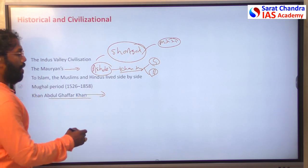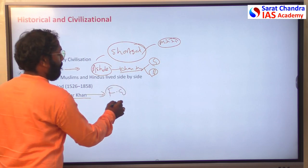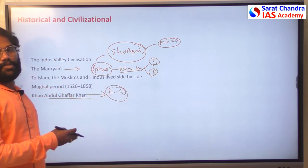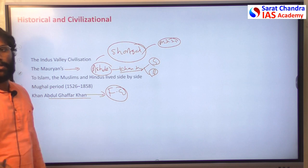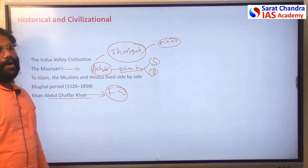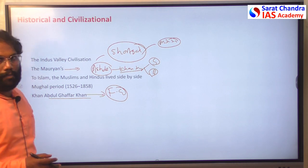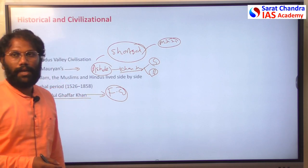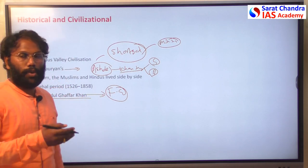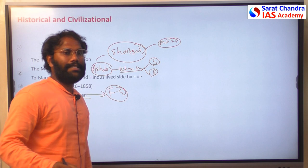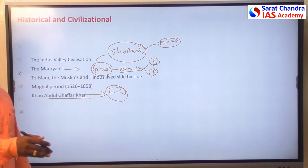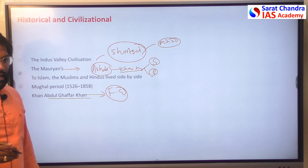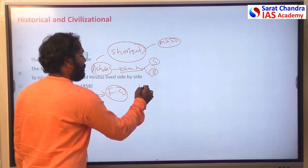During the freedom struggle, Khan Abdul Ghaffar Khan — also called the Frontier Gandhi — opposed the partition of India even though he was a Muslim. Subhash Chandra Bose also had ties with Afghan people; he dressed himself as a Pashtun man while escaping from India to Germany.